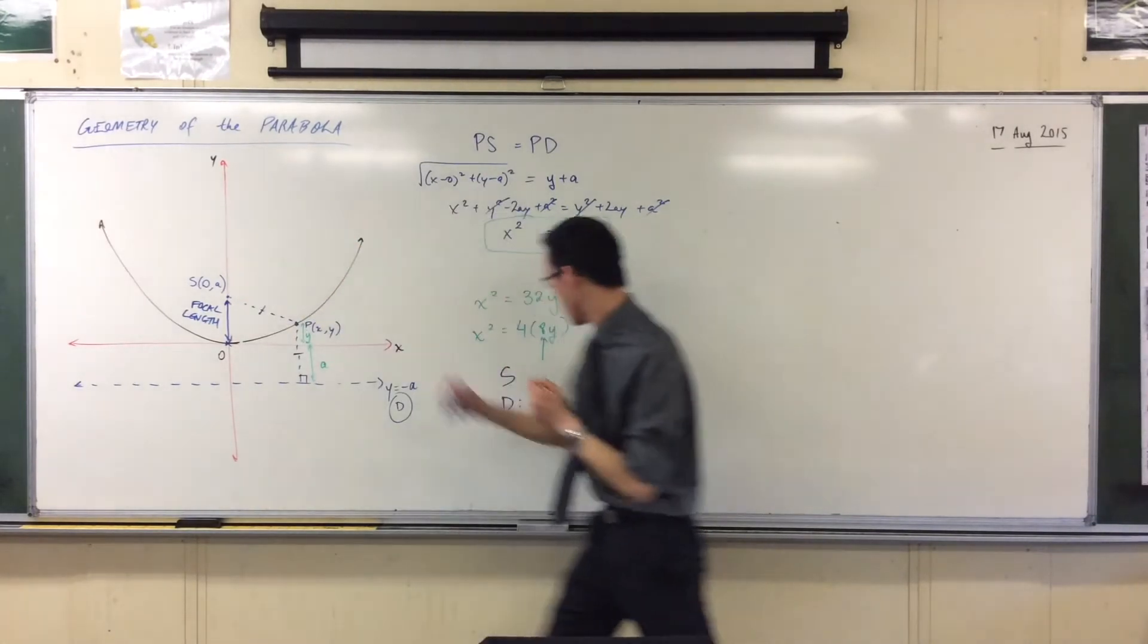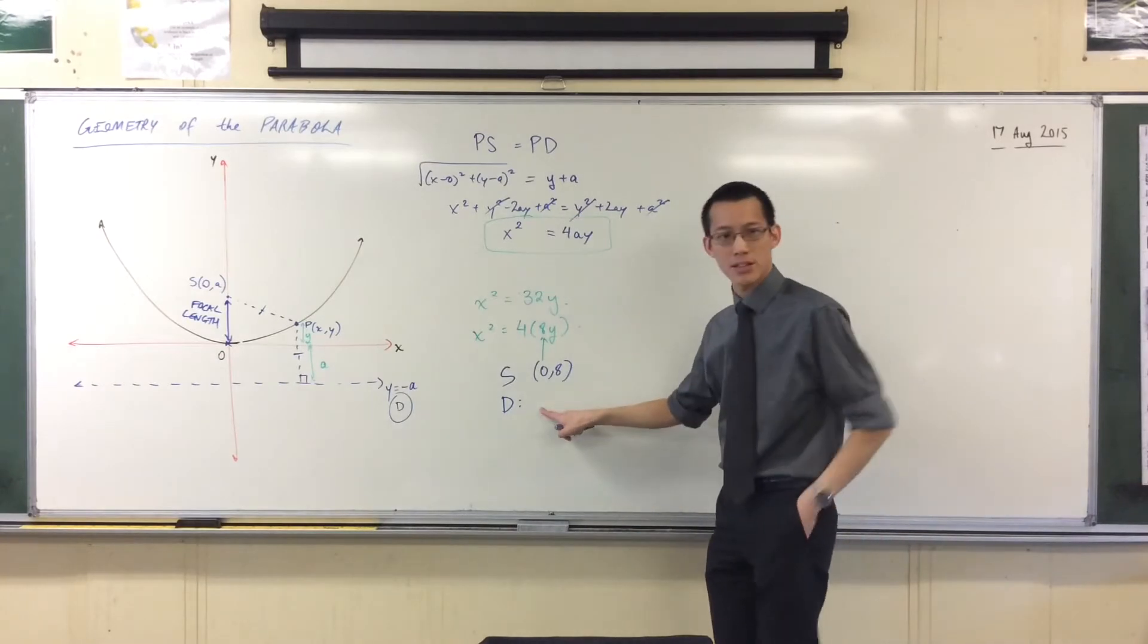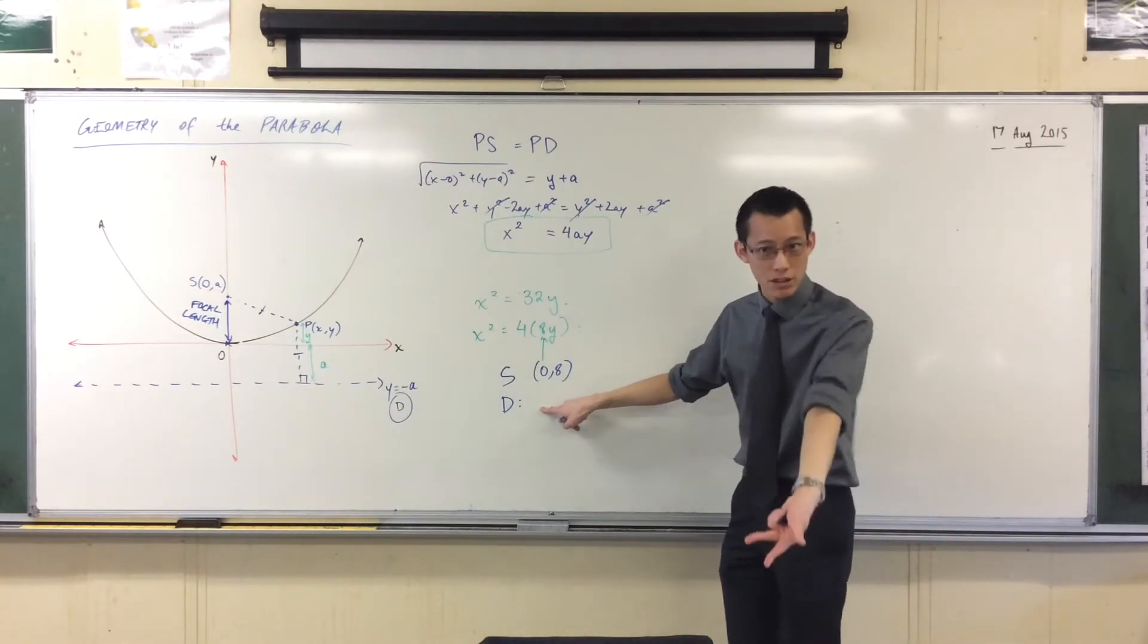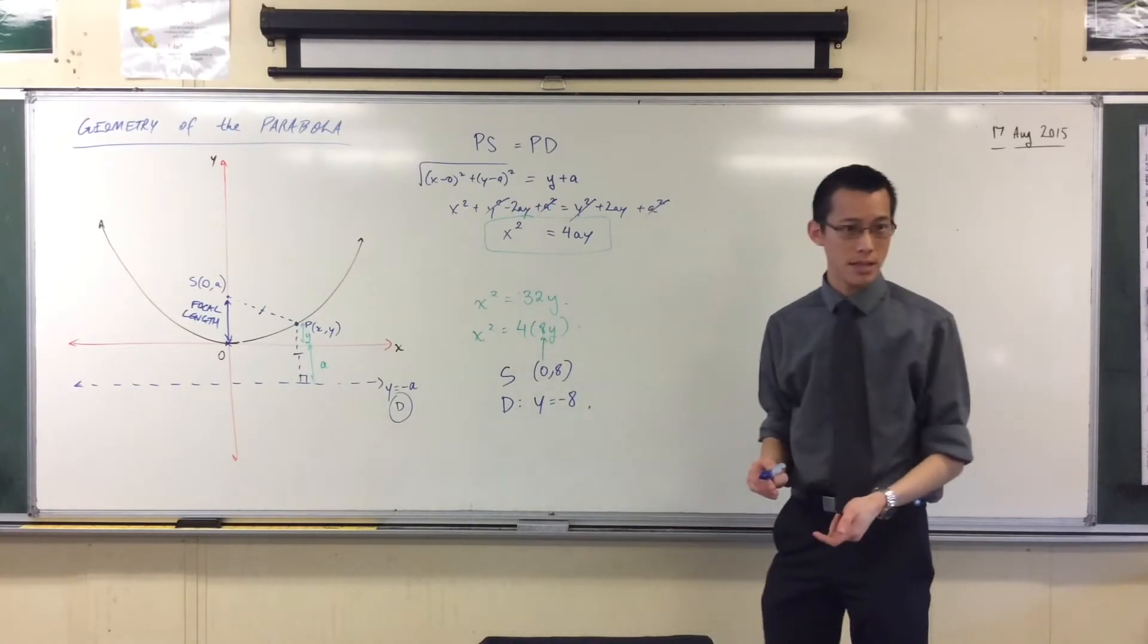And in exactly the same way, I could say, well, the directrix has to be the other way. It's still 8 units away, but it's below. So it's going to be y equals negative 8. You see that?